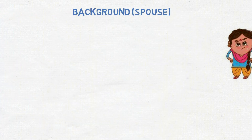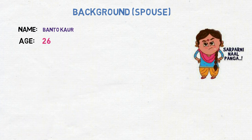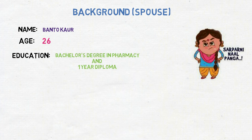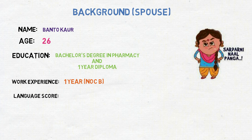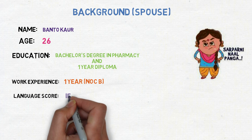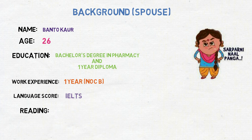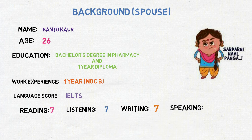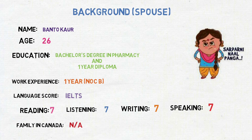Now let's move on to the background for his spouse. Name is Pantokor, age is 26. Education is a bachelor's degree in pharmacy and 1 year of diploma in India. Work experience is 1 year in NOC B. Language score in IELTS: reading 7, listening 7, writing 7, speaking 7 bands. Family in Canada is not applicable as she has no family living in Canada.